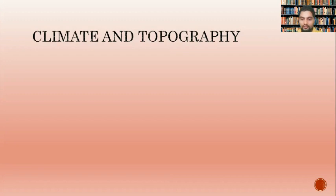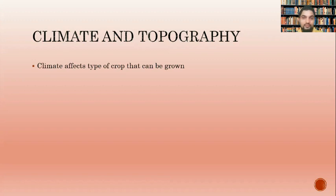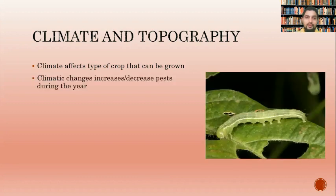One of the challenges in agriculture is climate and topography. The climate affects the type of crop we can grow. For example, we cannot grow crops adapted to cold temperatures in our country or in the Caribbean. Similarly, we cannot take tropical crops into temperate regions. Climatic changes may also increase the amount of pests throughout the year — rainy season brings one set of pests, and dry season brings another.